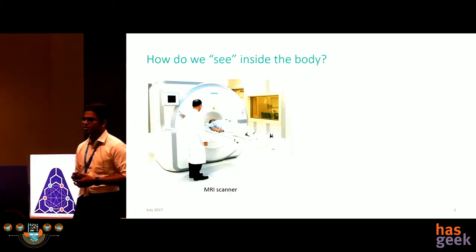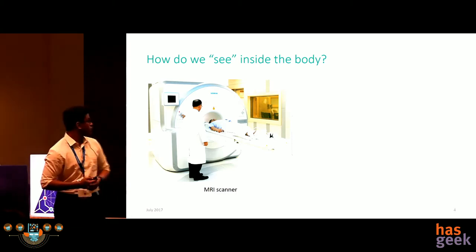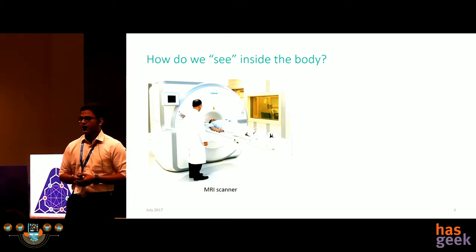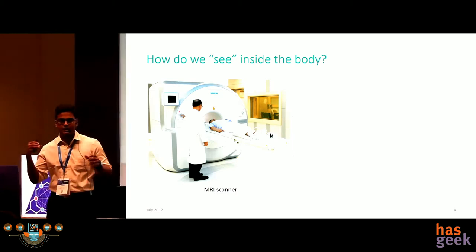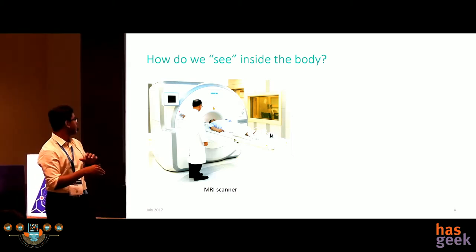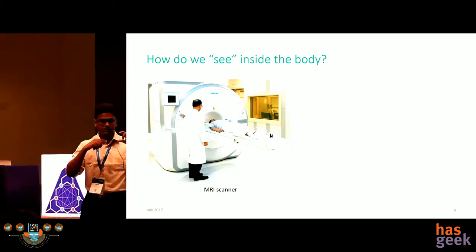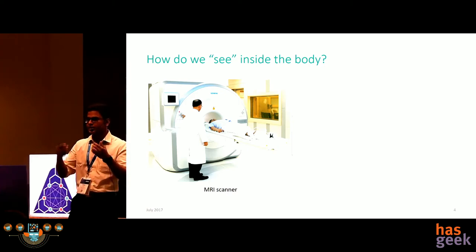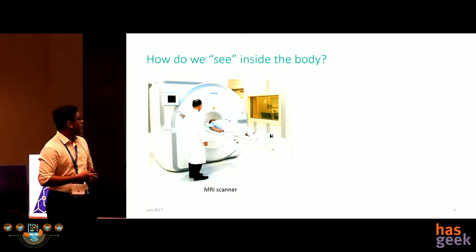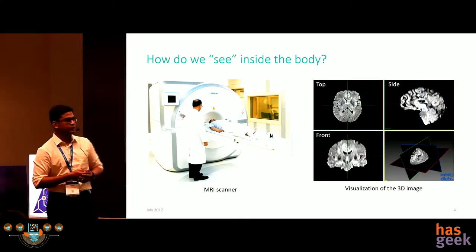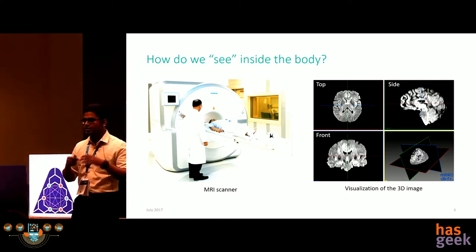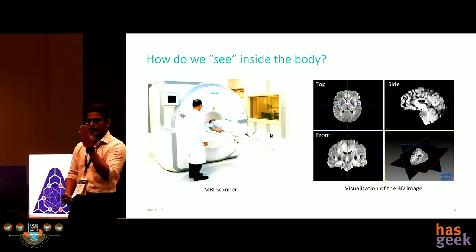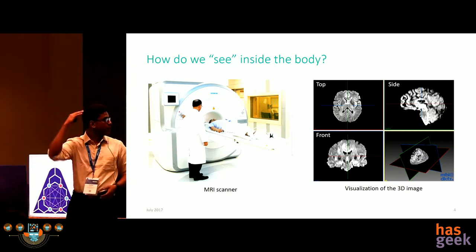Medical imaging allows us to see inside the body. This picture shows an MRI scanner. As the patient goes inside the scanner, this cylindrical structure takes a 3D image of the body's interior. When you visualize this 3D image on your computer screen, you see 2D slice sections from multiple directions — from the front, from the top, and from the side.